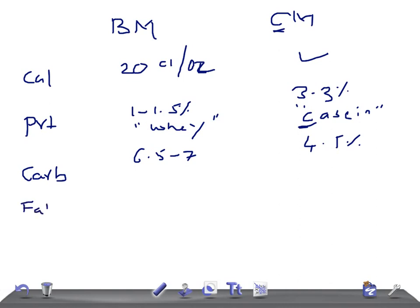For fats, breast milk has high low chain fatty acids, whereas cow's milk has more medium chain fatty acids.